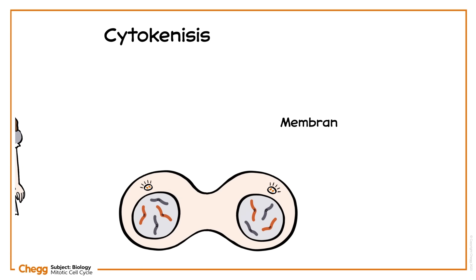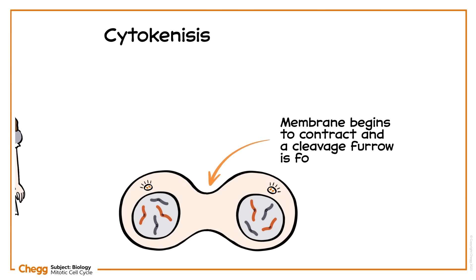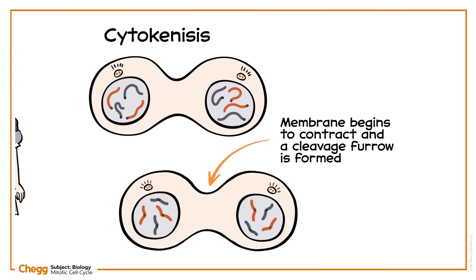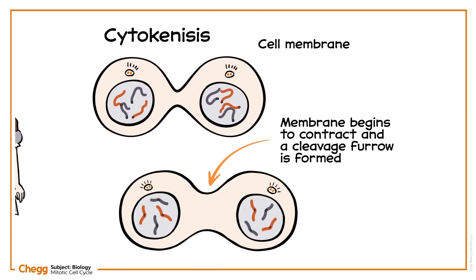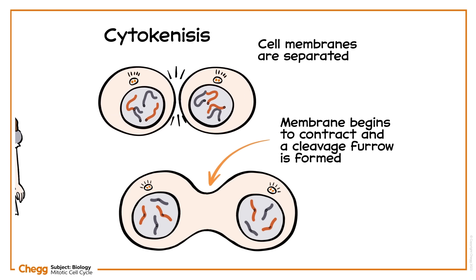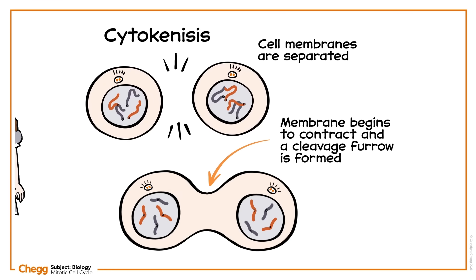The cell membrane begins to contract and a cleavage furrow is formed due to a protein called actin. In plants, the cleavage furrow is replaced by a cell plate for a stiff cell wall. Lastly, cell membranes are separated from the nucleus and all other cell organelles, and we have two independent cells.